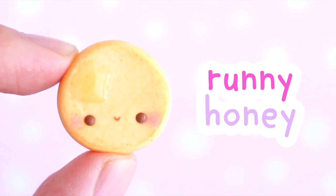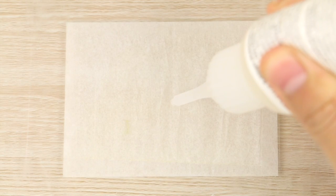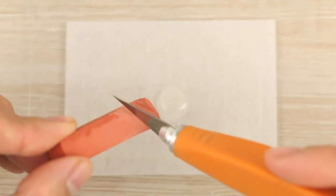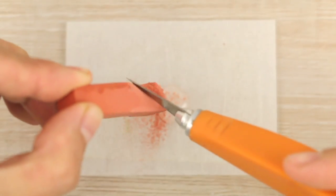And next up I'm making some honey. And for that I like to start with Fimo deco gel. And then scrape in some brown, orange, and yellow chalk pastel.